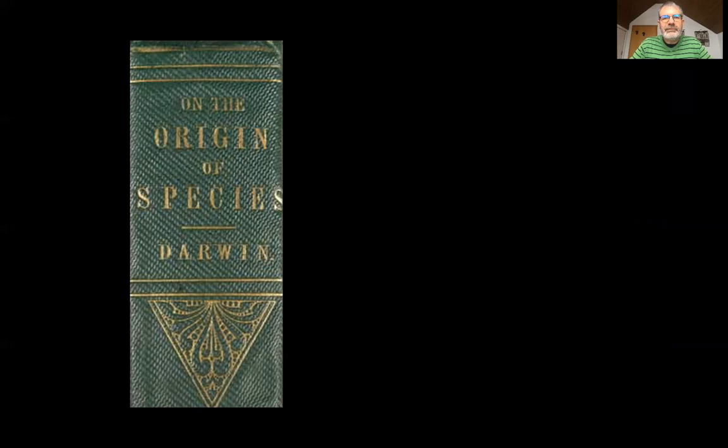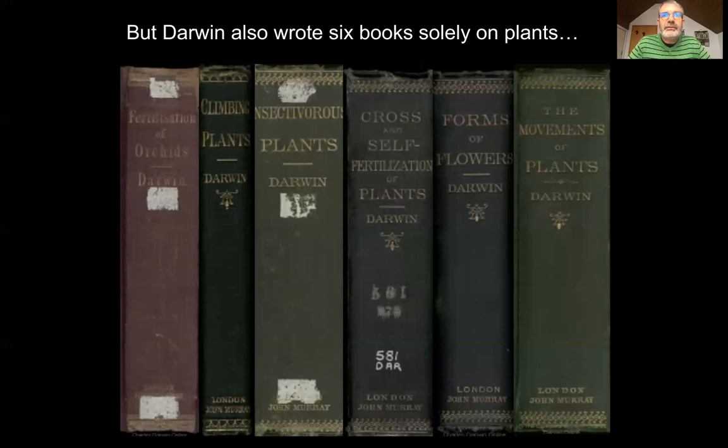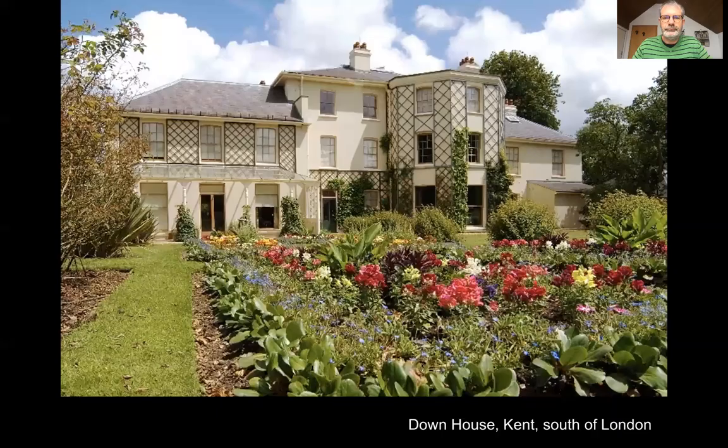However, within 'The Origin of Species' there are lots of examples drawn from the plant world. It's very interesting and generally unknown that Darwin actually spent a great deal of his time — particularly after publishing 'The Origin of Species,' in the later years of his life — working on plants. In fact, he published six whole books specifically and only on plants. To this extent, one might consider Darwin certainly as much a botanist as a zoologist, although he was very modest about his botanical skills.